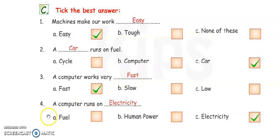Next, number four. Computer runs on fuel, human power, or electricity. Answer is electricity. Tick here and write the spelling of electricity in the blank. E-L-E-C-T-R-I-C-I-T-Y. Electricity.